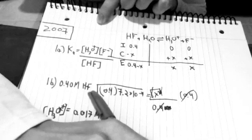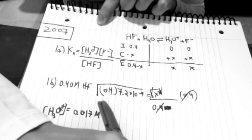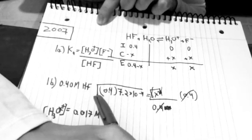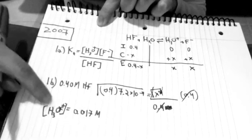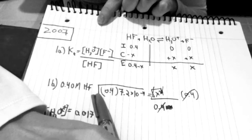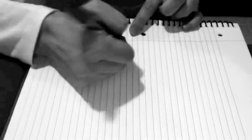Now for 1C — this was a two-point question by the way: one point to set it up correctly, and another point for getting the final concentration. For part C, they have a slightly different reaction. Hydrofluoric acid reacts with NaOH, which is fully ionized because it's an alkali metal, so it's really just OH⁻. The reaction gives H₂O and the fluoride ion.